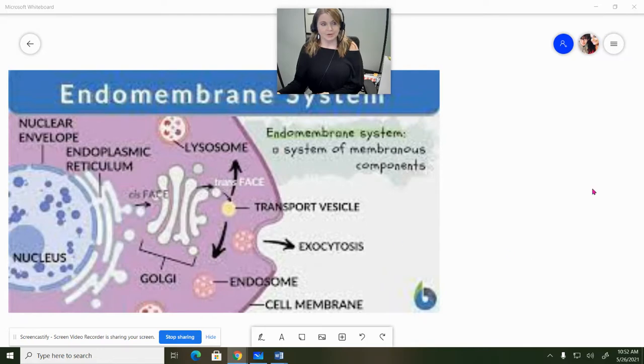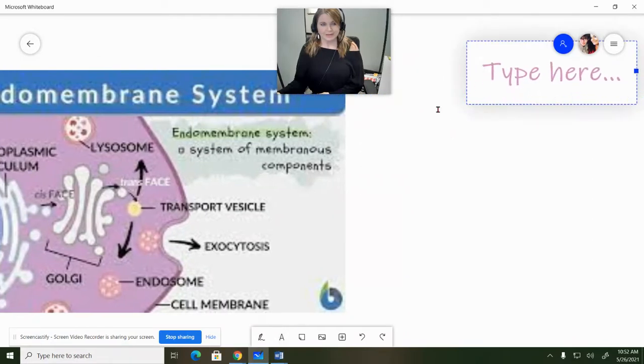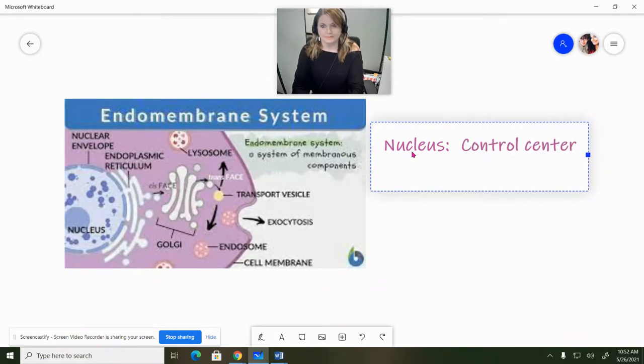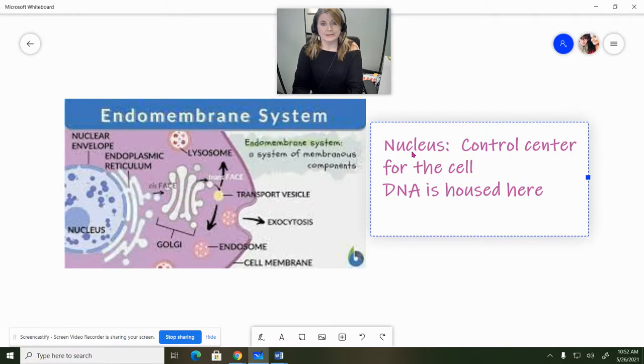So the first organelle we're going to talk about is the nucleus. We've actually talked about this one before, maybe not specifically as an organelle, but we've definitely talked about what it does before. So remember our nucleus. This is what we call the control center for the cell. So the DNA is housed here, and within the nucleus protein synthesis will begin. So transcription, which is a part of the process of protein synthesis, is done inside of the nucleus.